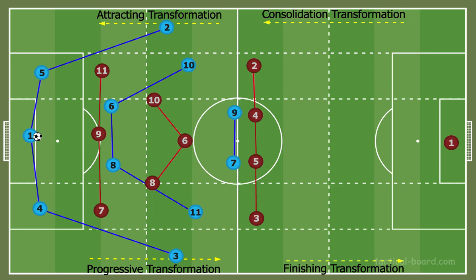We're going to be talking about the transformation periods and in-between each third of the field when the team is in possession. We'll be looking through the lens of the team with the ball and the transformations, the structure, and the team's goals as they enter different thirds of the field. I'm going to pick up where I left off, implementing a 3-5-2 because it shows really good transformations through the thirds and is coherent with the topic. These are what I call the transformation periods in the game.